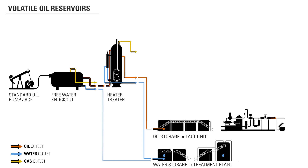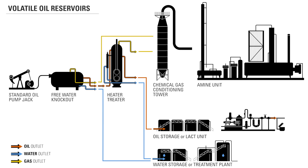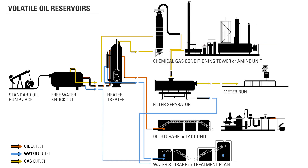Volatile oil reservoirs contain high amounts of corrosive gas in addition to oil and water. This type of reservoir will follow the same flow path as standard oil reservoirs except for the gas. Because the gas in volatile oil well streams is highly corrosive, it must be sent through an additional gas treatment process in a chemical gas conditioning tower or amine unit. These vessels are designed to absorb unwanted elements from the acidic gas. From there, the gas will go to a filter separator to remove any chemical carryover and then go back to the gas sales line.